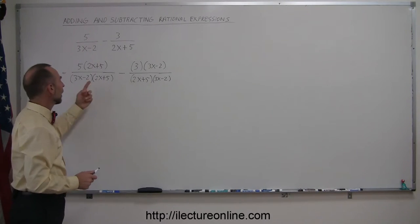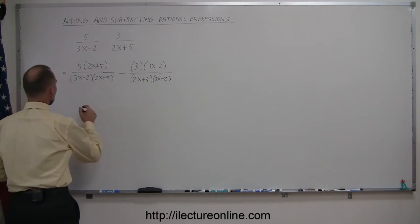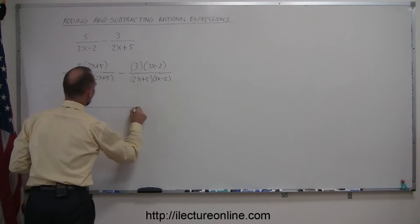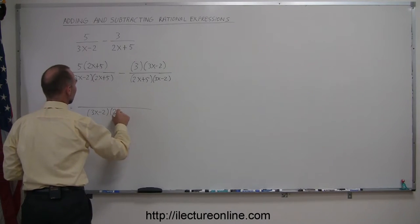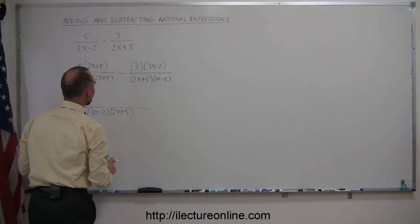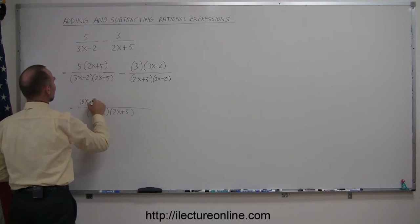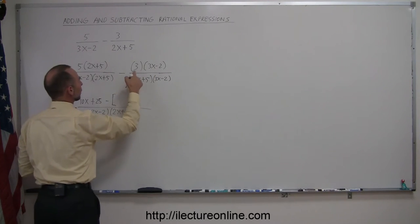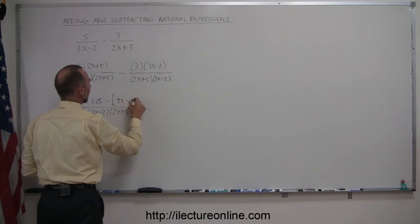So now you can see that the denominator is the same. We can write as a product of two binomials, so this is equal to everything written over a common denominator, 3x minus 2 times 2x plus 5. And then in the numerator we're going to multiply these out, so this is 5 times 2x which is 10x, 5 times 5 which is plus 25. And then we subtract from that the product of those, so that would be 3 times 3x which is 9x, and 3 times negative 2 which is minus 6.